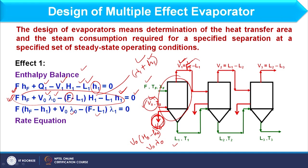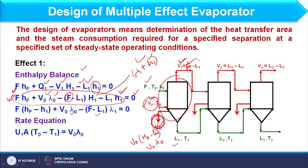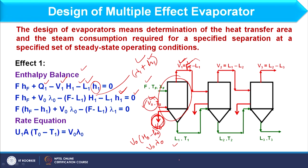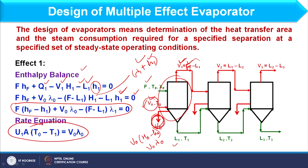We can also obtain the rate equation: Q = U·A·ΔT_mean. In this evaporator, the mean temperature difference is the heating media temperature minus the effect temperature. For the first effect, the temperature difference is T0 minus T1. So U1·A·(T0 − T1) equals V0·λ0, because this is the total heat duty of an effect. As far as design is concerned, we need to calculate the area of each effect and steam consumption, and we are assuming equal area for each effect.